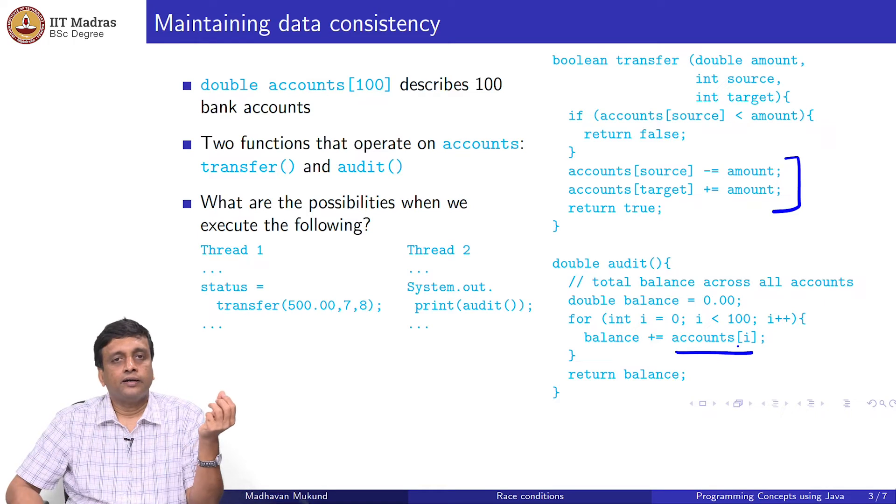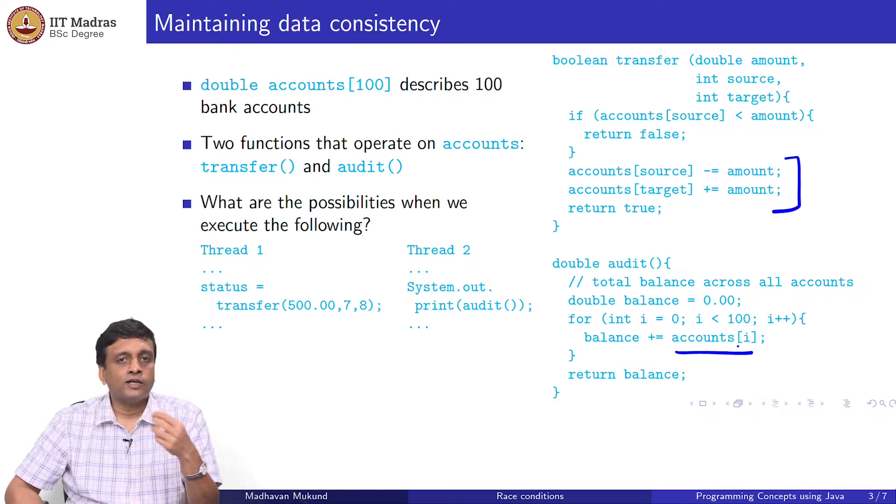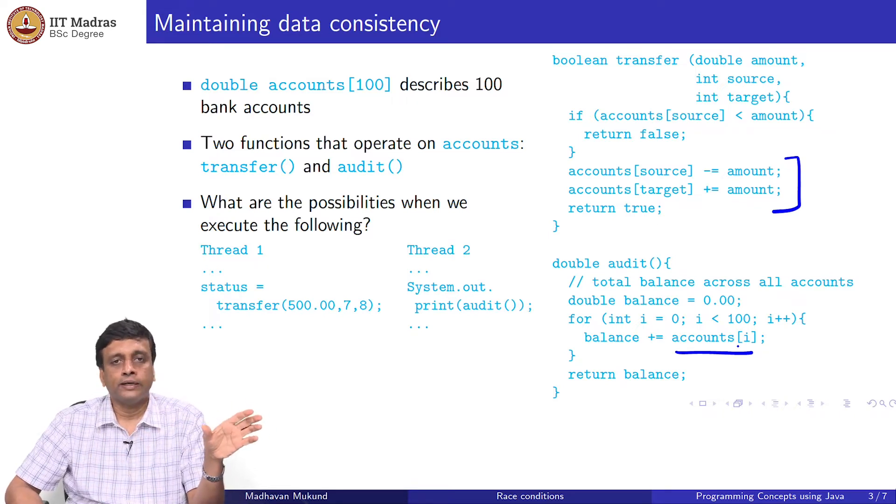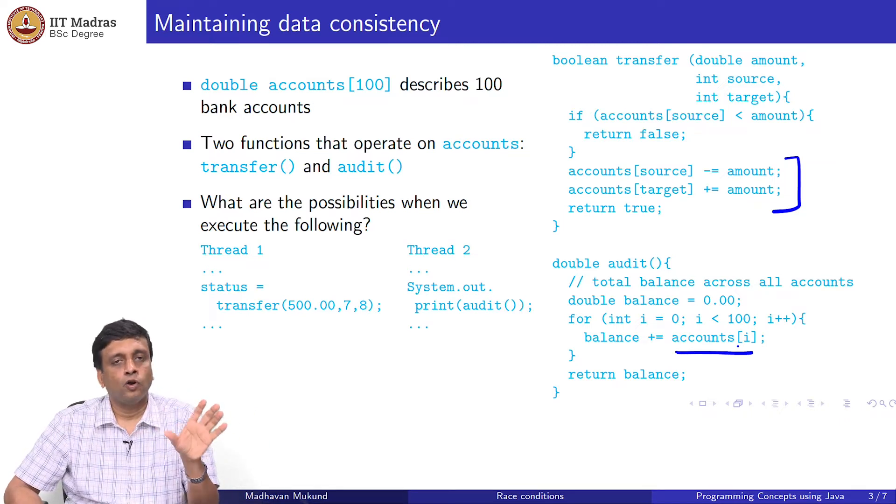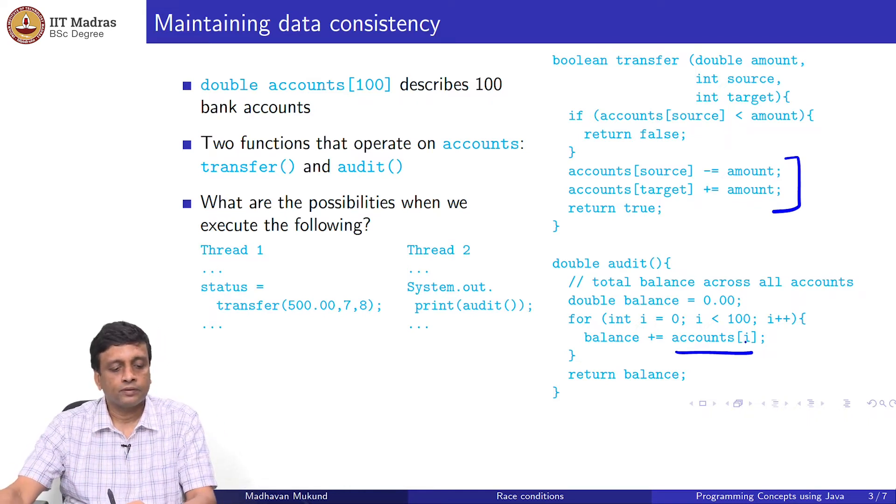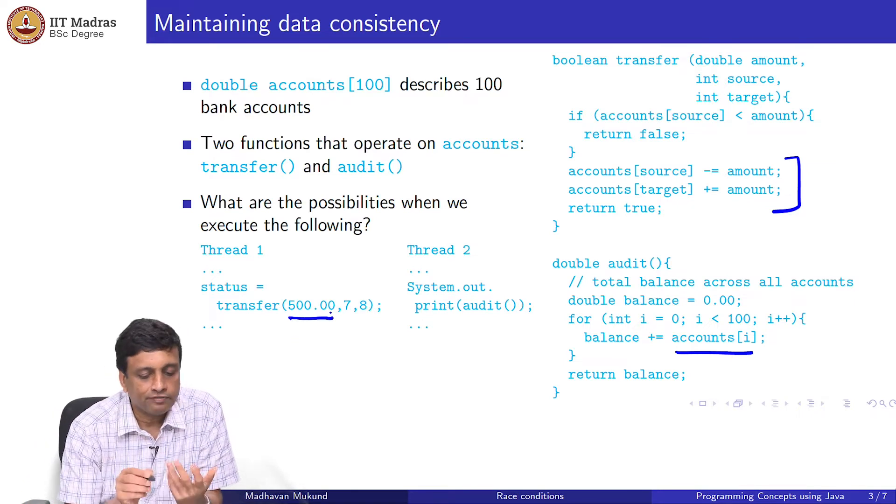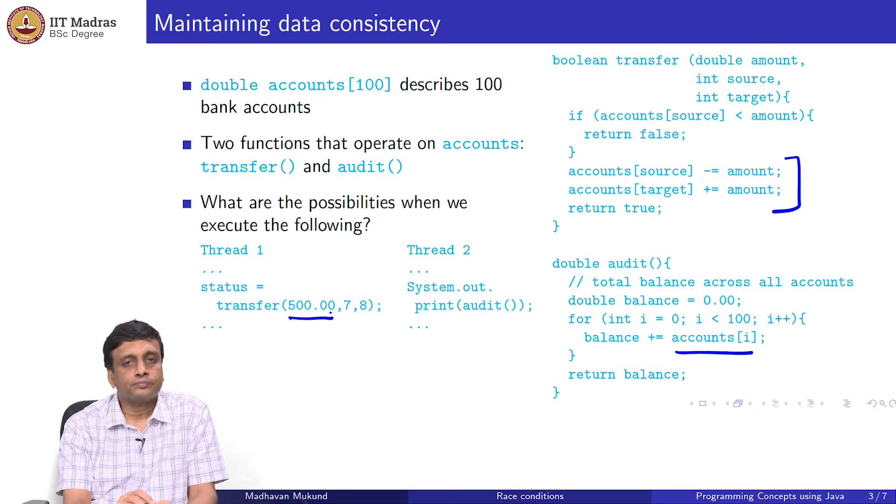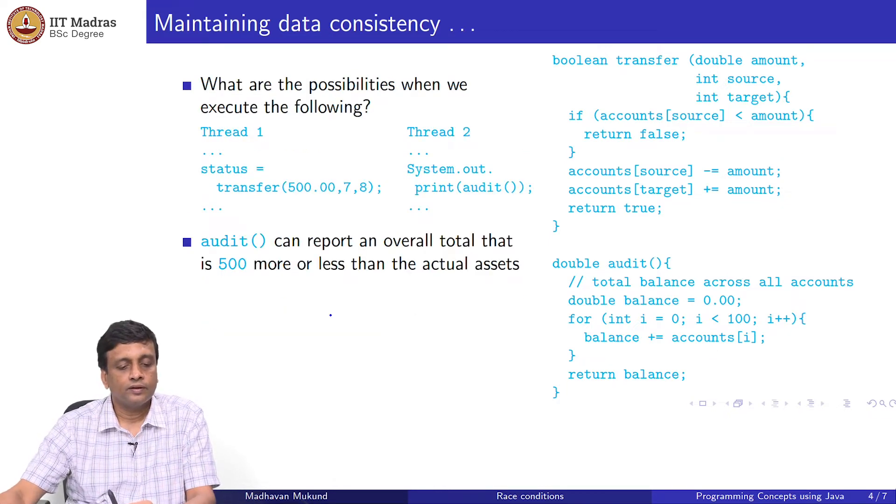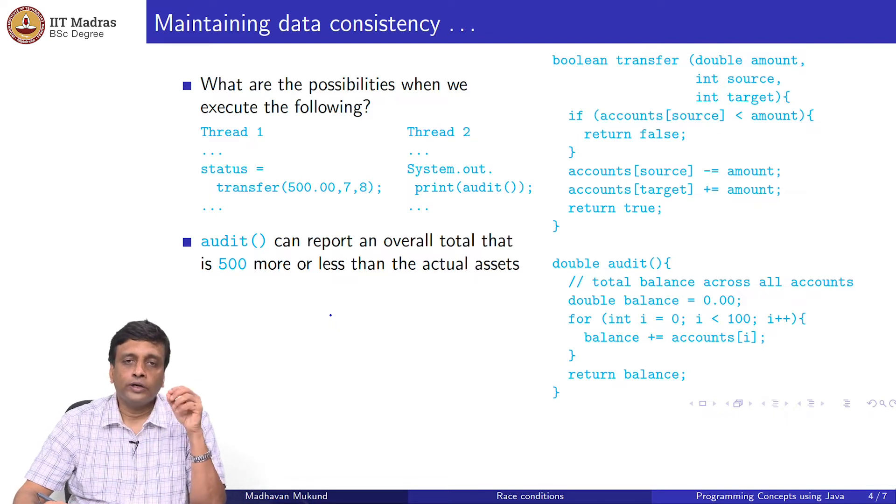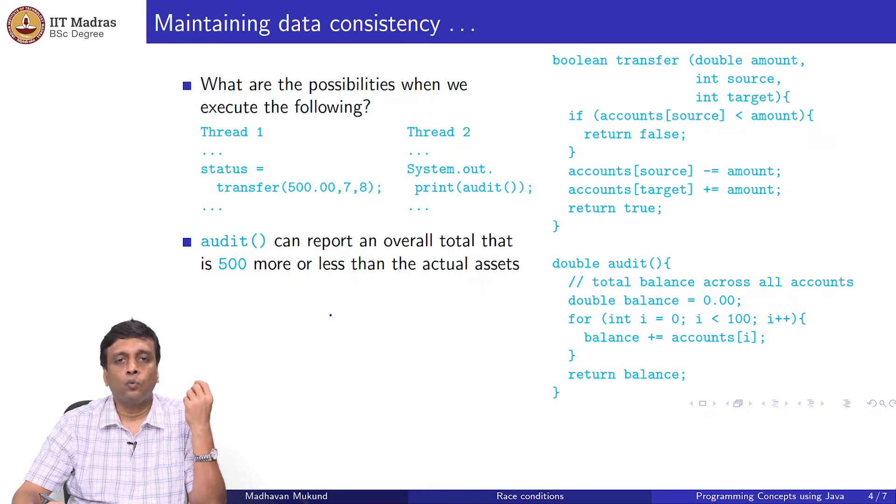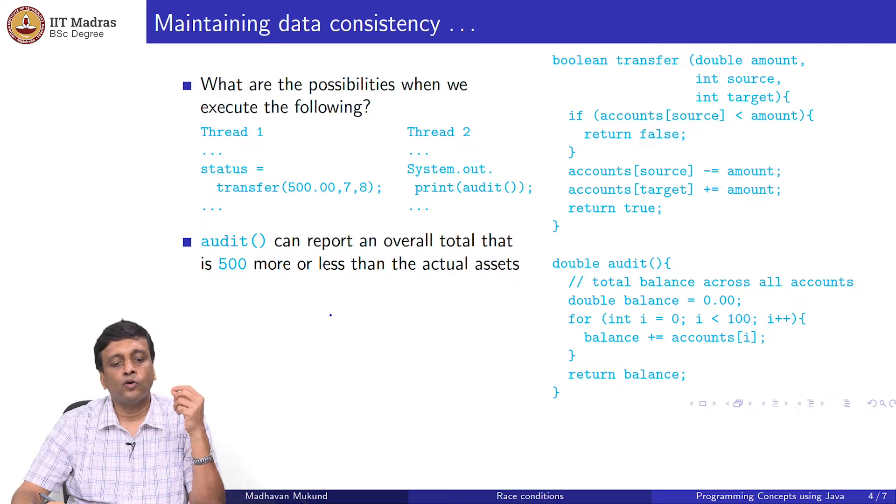Remember what we said about the audit. In this particular example, because I cannot transfer money into or outside this array from anywhere else, the money inside the accounts 0 to 99 is fixed. The audit should in principle always answer the same thing. It should always give me the same value which is the initial sum of accounts 0 to 99. Here I am transferring 500 rupees from account 7 to account 8. In parallel, I am asking audit to report what is the situation.